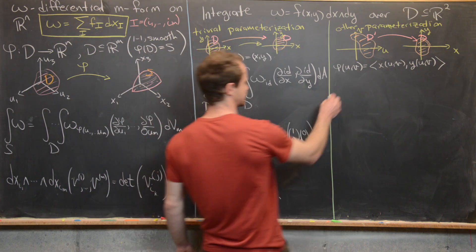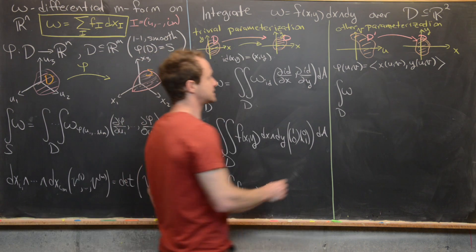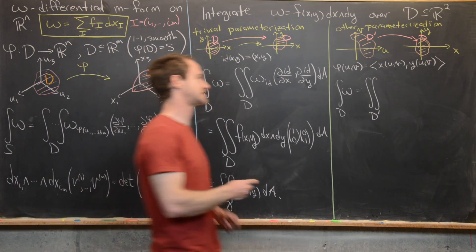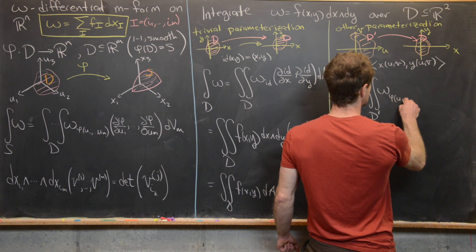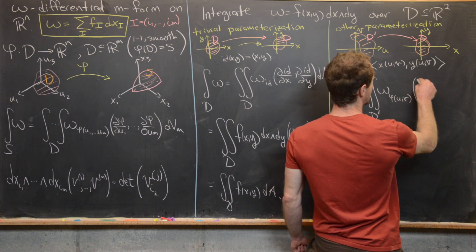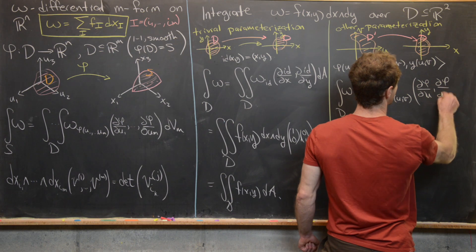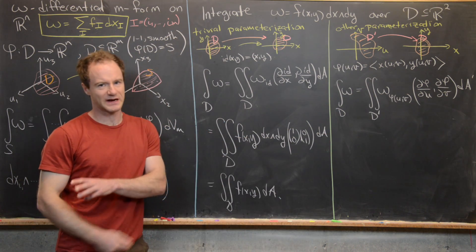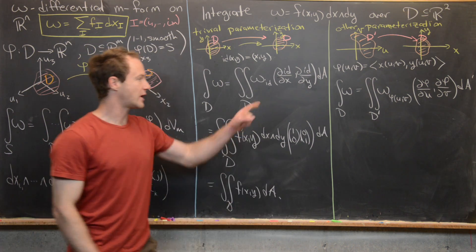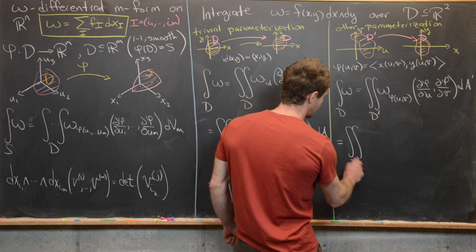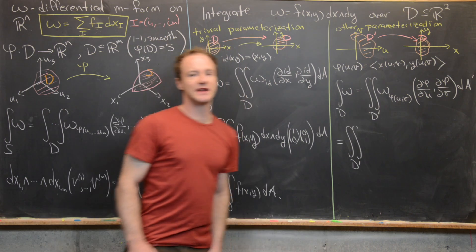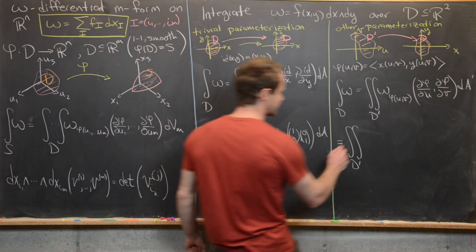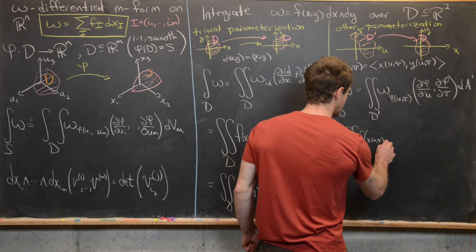Now with the second parametrization, integrating the two-form omega over D becomes a double integral over D', since that's the region parametrizing D. We have omega evaluated at phi(u,v), further evaluated at the partial of phi with respect to u and the partial of phi with respect to v, times dA'. This means we plug x(u,v) everywhere we see x and y(u,v) everywhere we see y, giving f(x(u,v), y(u,v)) — a function of u and v.